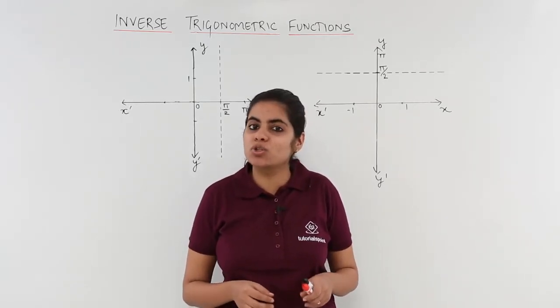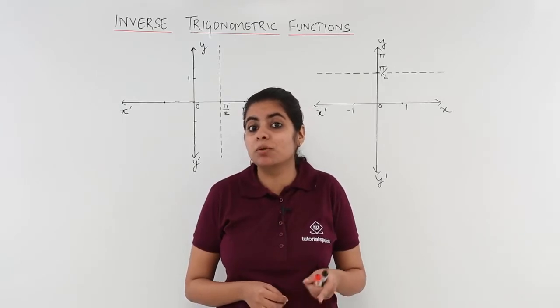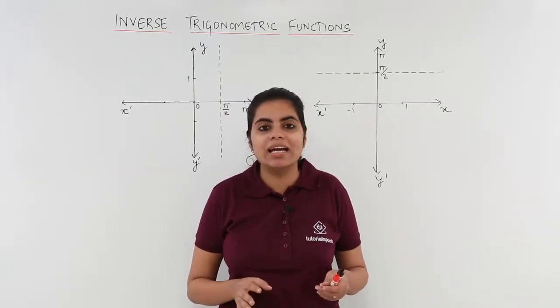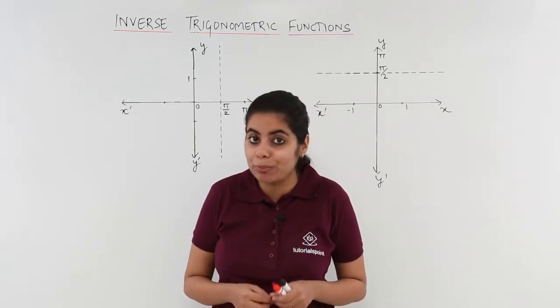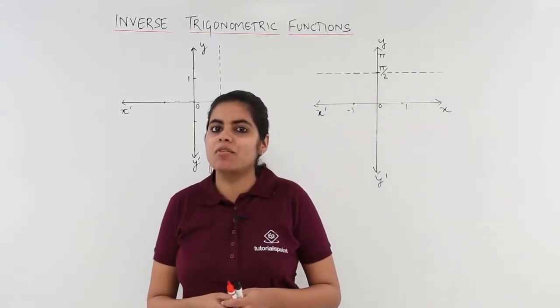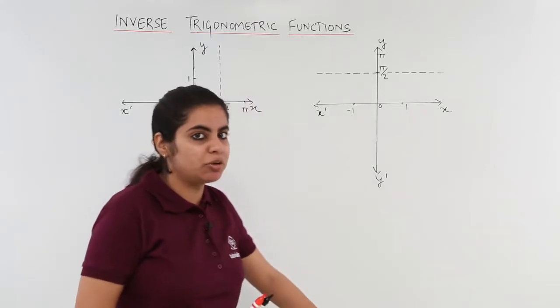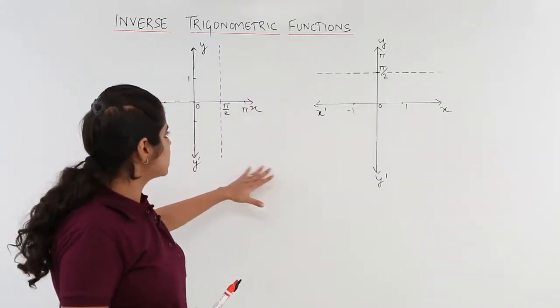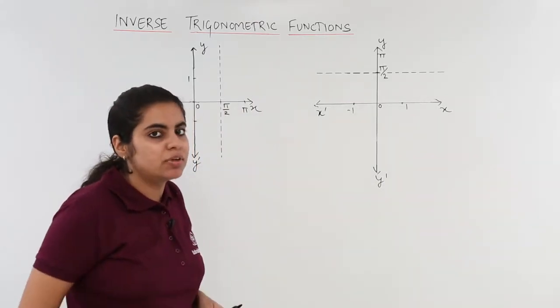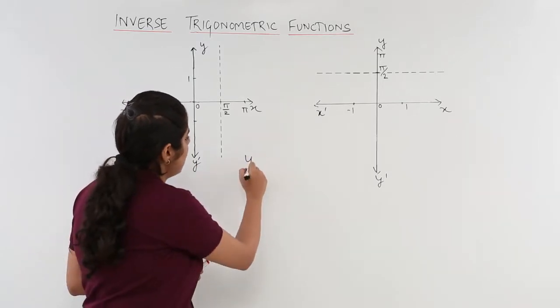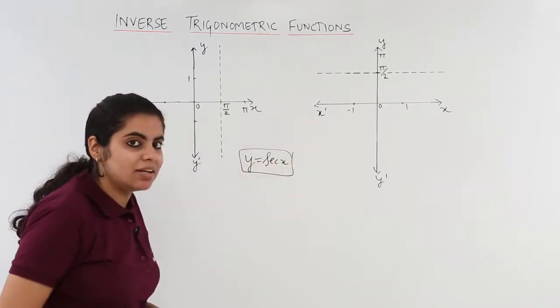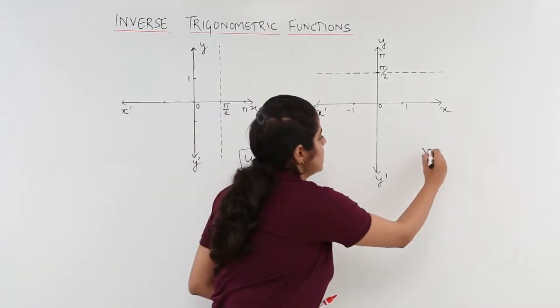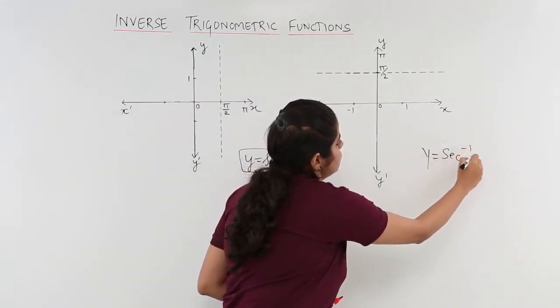Now let's see how to draw the graph of secant inverse x using the previous knowledge of the graphs and the previous knowledge of functions, their domain range and co-domain. You can see I have drawn two schematics in front of you on the whiteboard, the first one and the second one. The first one I would be using for y equals secant x and the second one that I would be using for y equals secant inverse x.